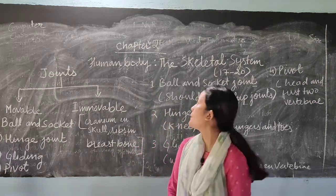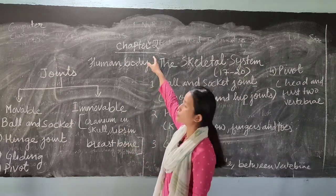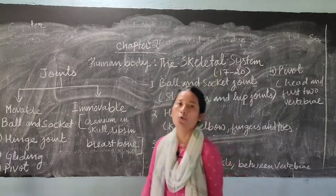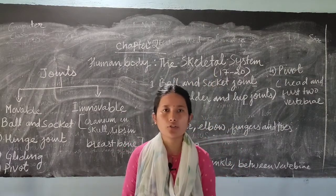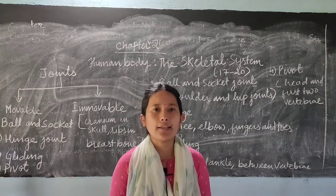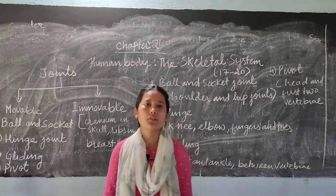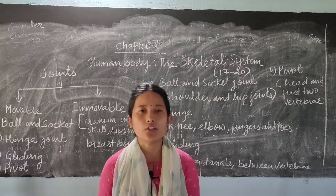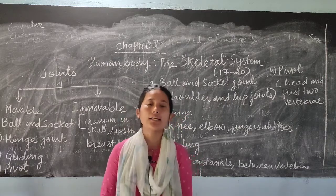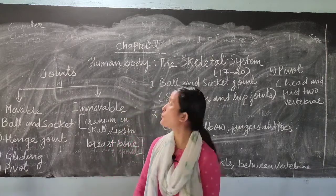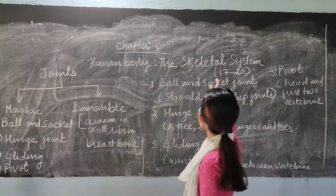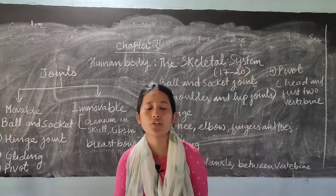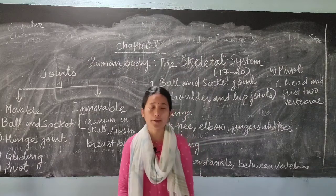Today from chapter 2, that is human body the skeletal system, we will be discussing about joints and types of muscles. First let us discuss about what joints are and what are its types. You can refer to page number 17 to 20 for today's topic.